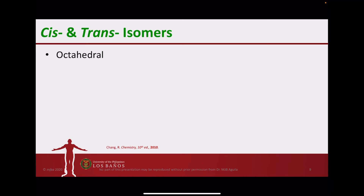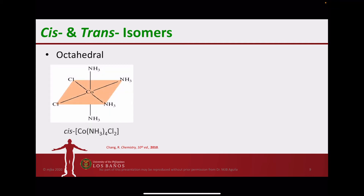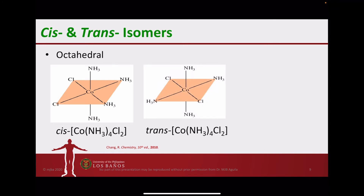Cis-trans isomerism is also observed for octahedral complexes. Take a look at the position of the two chloride ions bonded to cobalt — when they are adjacent to one another or side by side, that is the cis arrangement. Whereas if the two chlorides are opposite one another at 180 degrees apart, that is considered to be the trans arrangement.